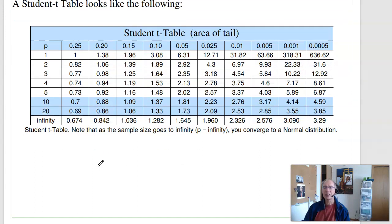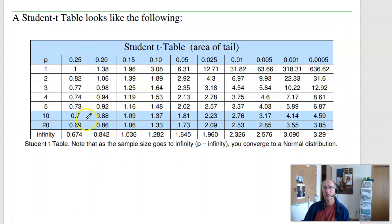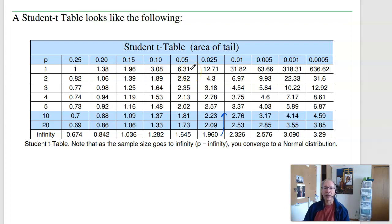A t-table looks like this — similar to a normal distribution, which is the bottom row, but it takes sample size into account. As the sample size goes to infinity, a t-distribution converges to a normal distribution. If the sample size isn't infinity, I'm a little more cautious. The number of standard deviations needed to capture 5% tails goes from 1.645 and gets bigger as I have less data. A sample size less than 2 is nonsense, so the table stops there.